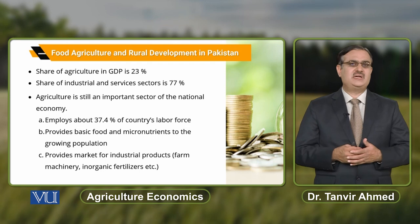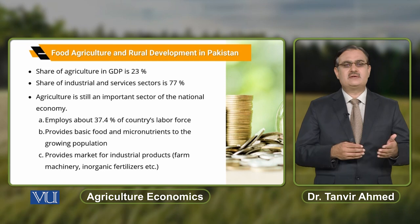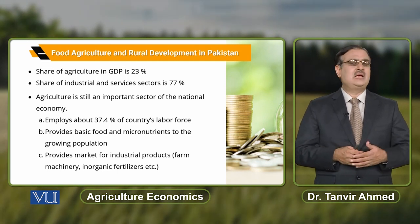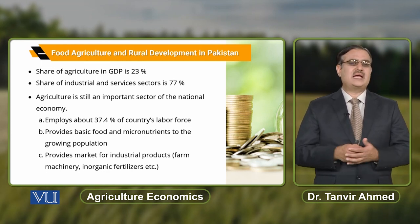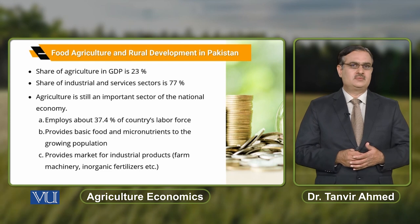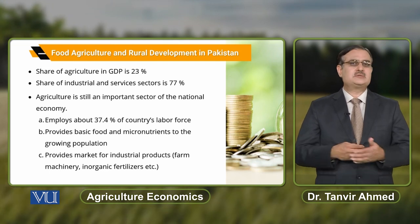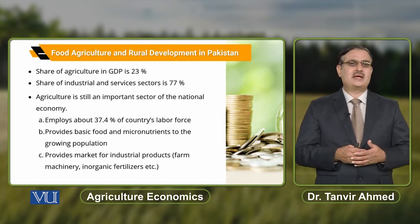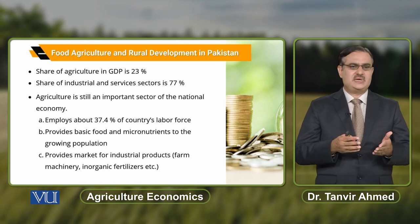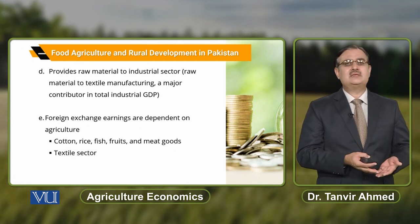The agricultural sector is basically a market for the industrial products produced by the industrial sector. اس میں اگر farm machinery کی ہم بات کریں، fertilizer کی بات کریں — یہ سب inputs ہیں that are required to produce agricultural output. اور یہ industrial sector جو form implements، fertilizer، insecticides اور pesticides produce کر رہا ہے، ان سب کی market agricultural sector میں ہے.